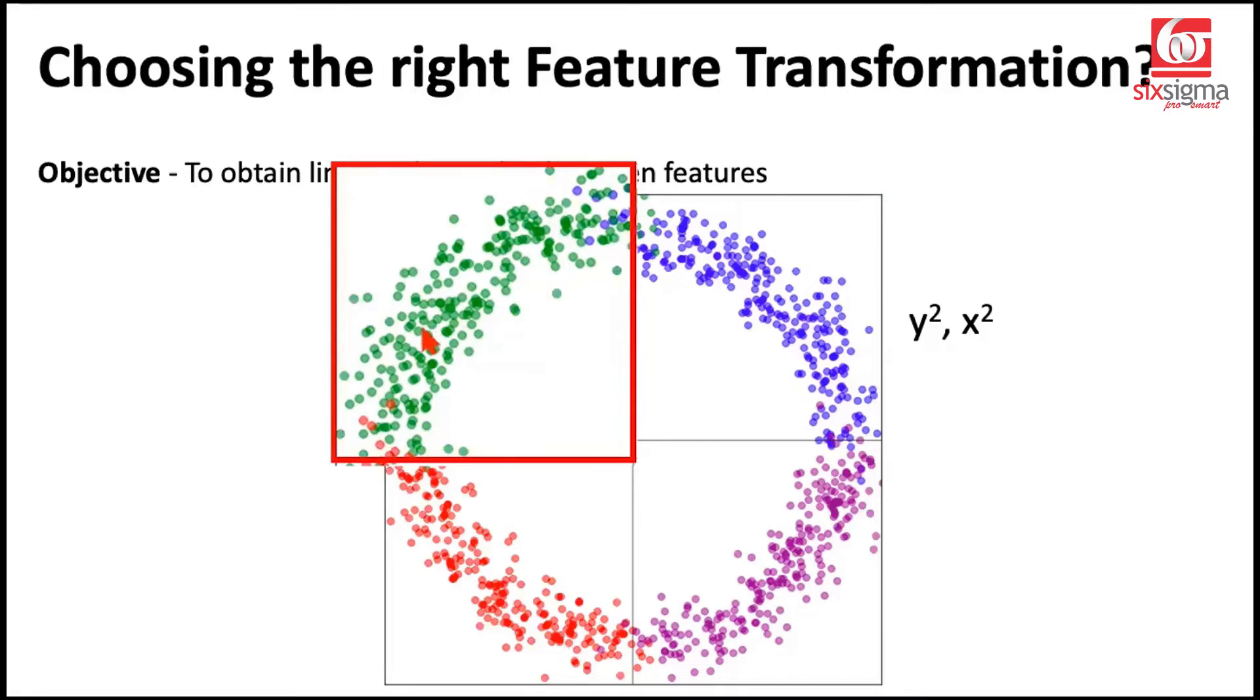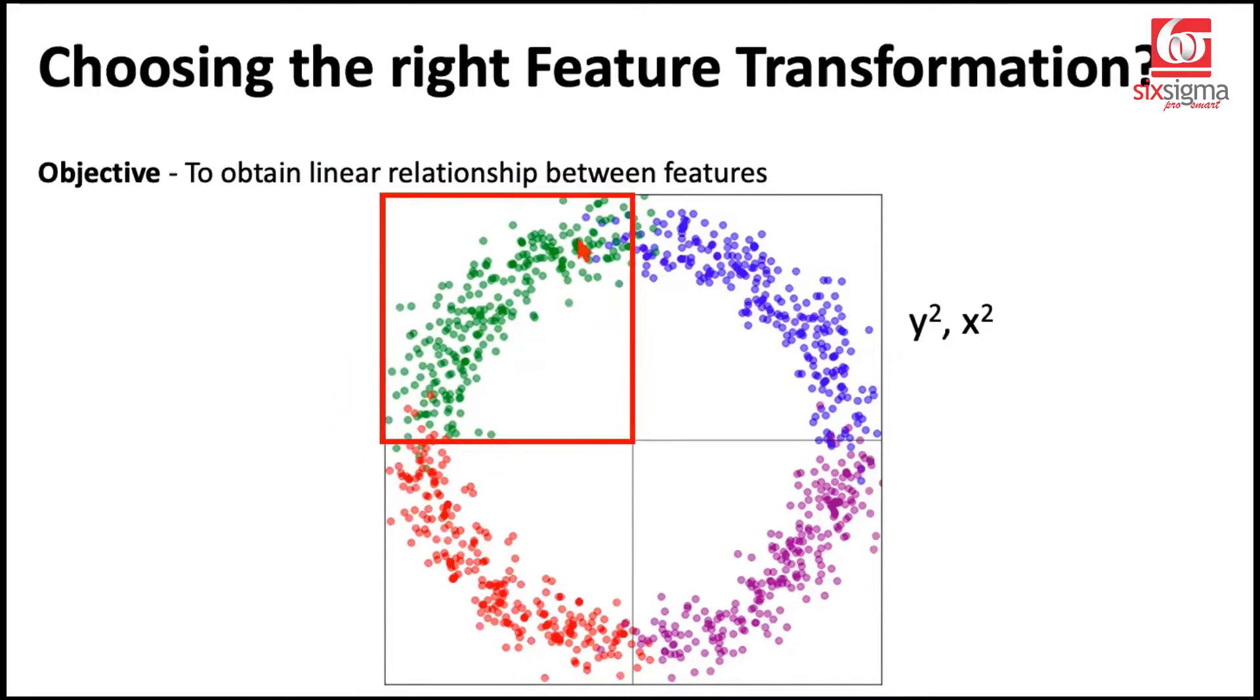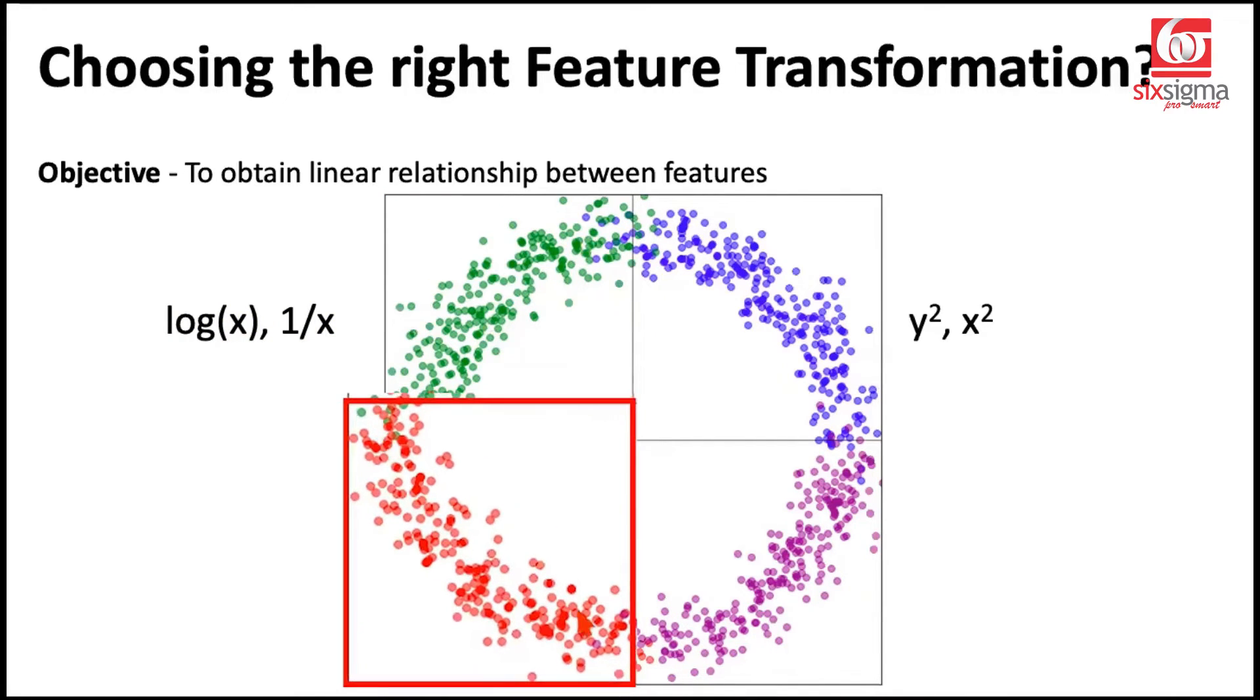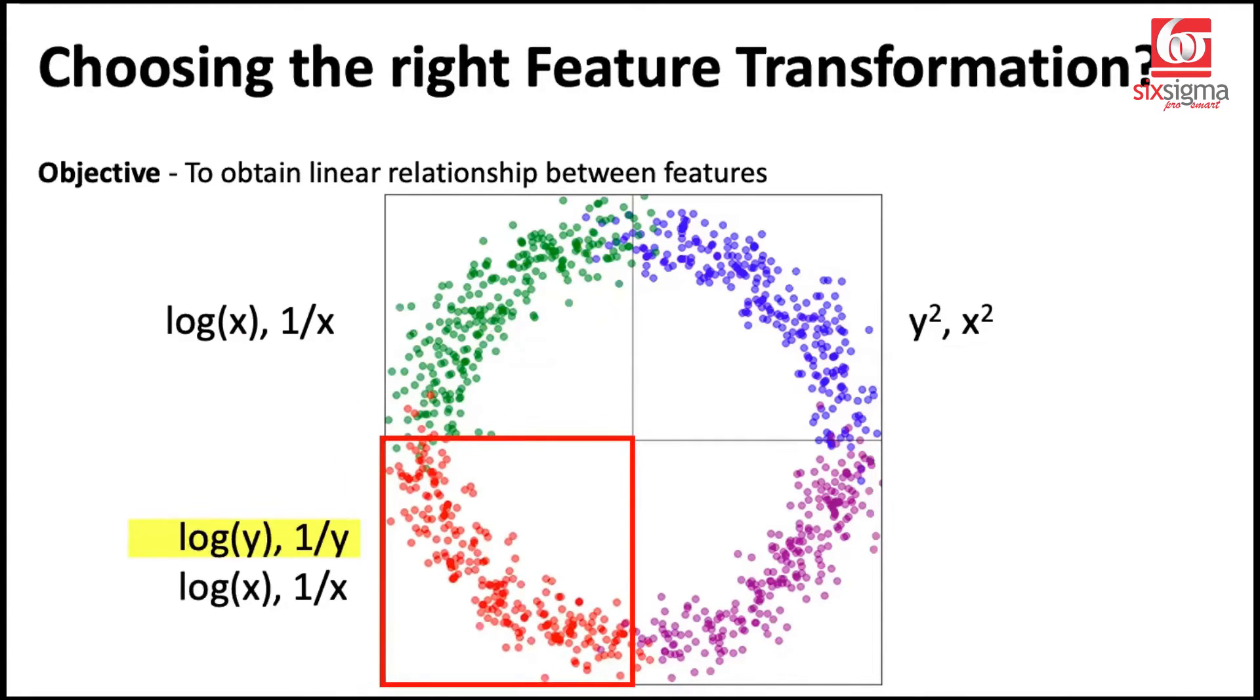Likewise, if we focus on quadrant two, if you have this kind of relationship between x and y, the recommended transformations are only on x. Either you can do a log transformation or a reciprocal transformation, and I'll show you what happens when you apply these in some time.